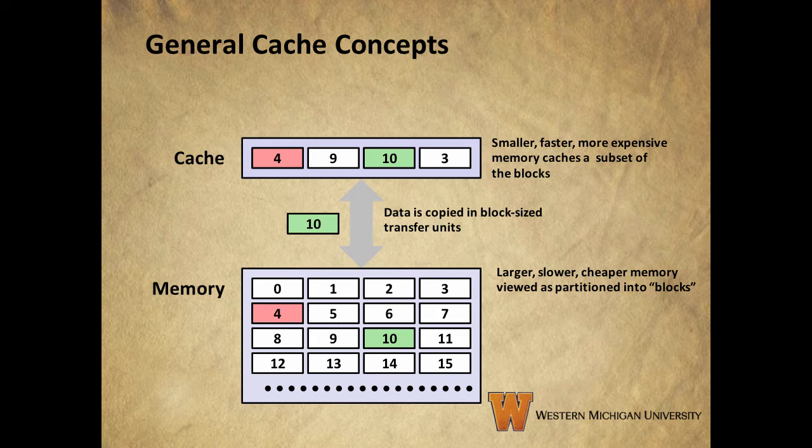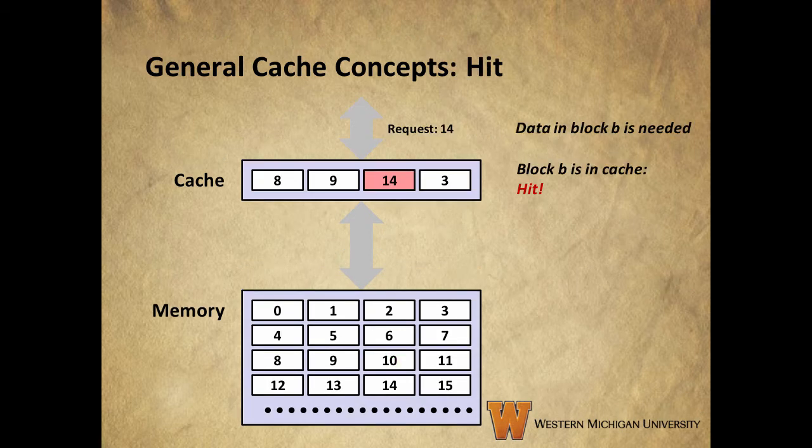When the block is not in the cache and needs to be retrieved from memory, it's called a miss. First we'll look at a hit — this one's pretty straightforward. Let's say that a program needs data in a particular block. It requests that block from the cache, and if it's already there, we have a hit. In this example, a program requests block 14, which is already in the cache, so we don't have to go to the memory — memory will be at the next level down of the pyramid, which will be slower than the cache — and we get the data to the program at the speed of the faster cache.